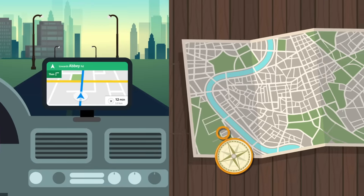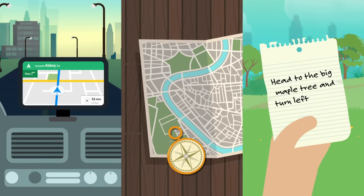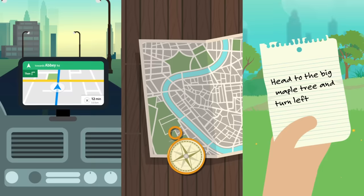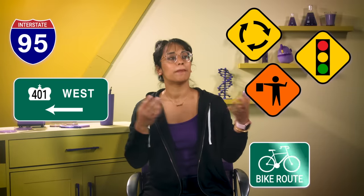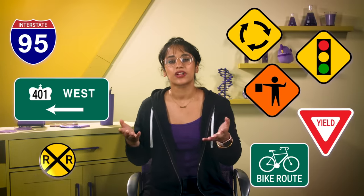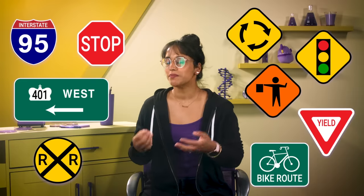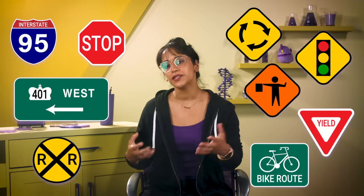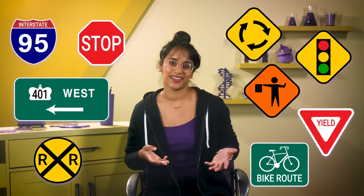Whether it's GPS, a fold-out map, or directions like 'head to the big maple tree and turn left,' we need navigational tools to help us know where to go, especially as we venture to new places. But there are highways, freeways, roundabouts, stoplights, construction signs, bicycle lanes, and so many other kinds of navigational signs and symbols.